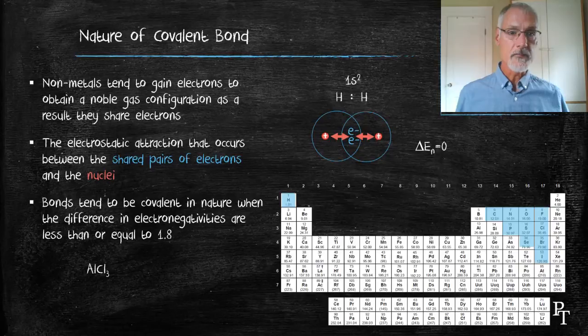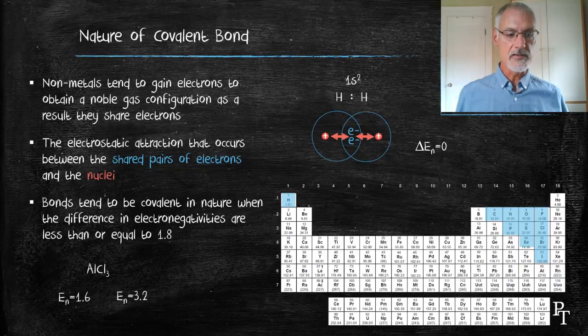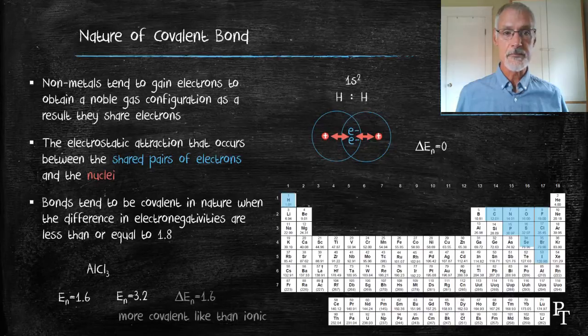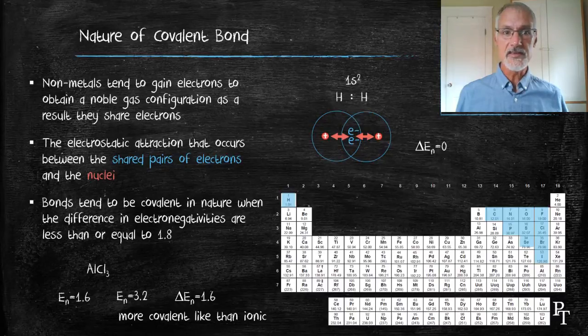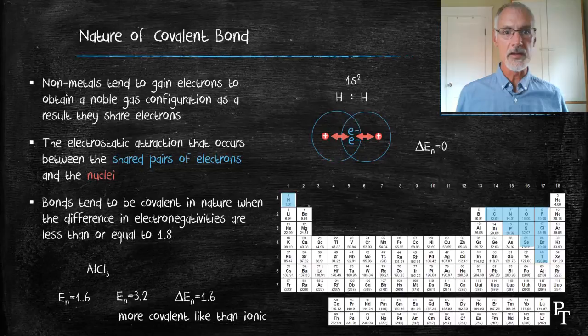Let's take a look at another example, aluminum combined with chlorine. Here the difference in electronegativity is 1.6. Although we would expect at first glance, aluminum being a metal and a non-metal, we would expect an ionic bond. In this case, the difference in electronegativity is 1.6, and this compound behaves more like a covalent compound than an ionic one.